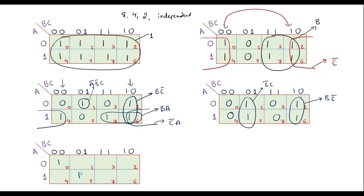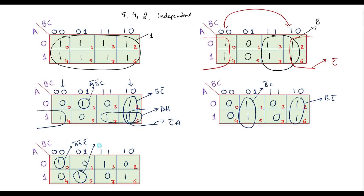Now consider 1,1,1,1 with all remaining cells 0. Here grouping of 8, 4, or pair is not possible for all cells individually — we don't find any adjacent 1s, so we go independent. The values are: A-bar B-bar C-bar, A B-bar C, A-bar B C, and A B C-bar.